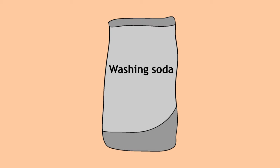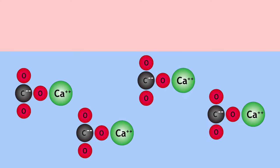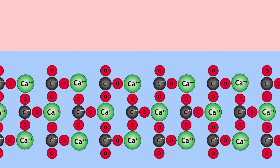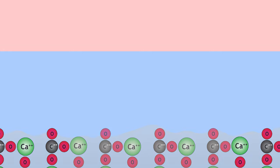Enter washing soda, sodium carbonate. Much cheaper than soap. When you add the soda, the calcium ions join up with the carbonate ions, forming limestone as a precipitate, leaving water free of the hard ions.